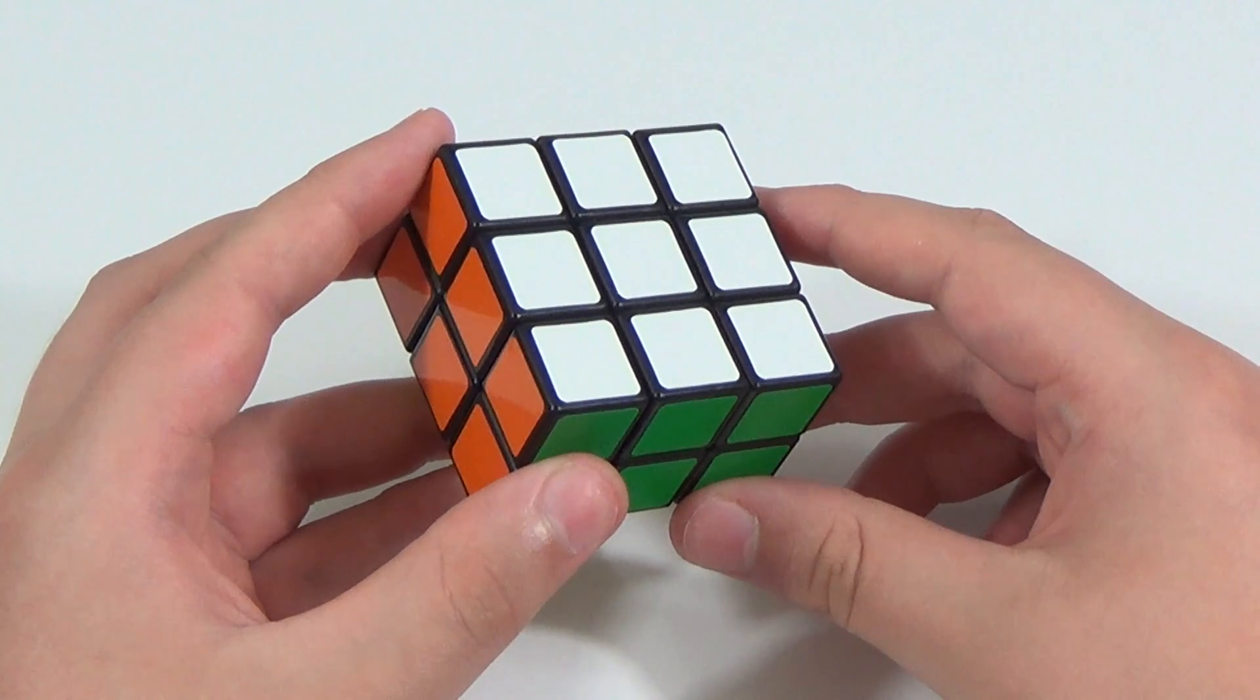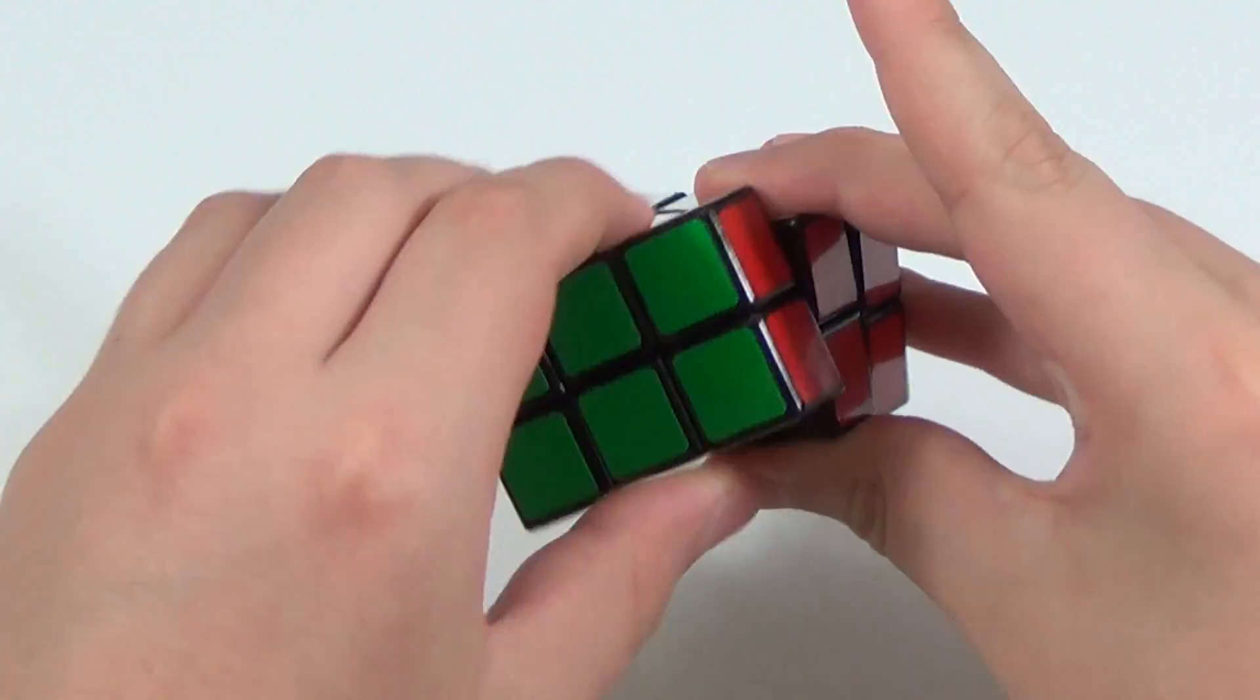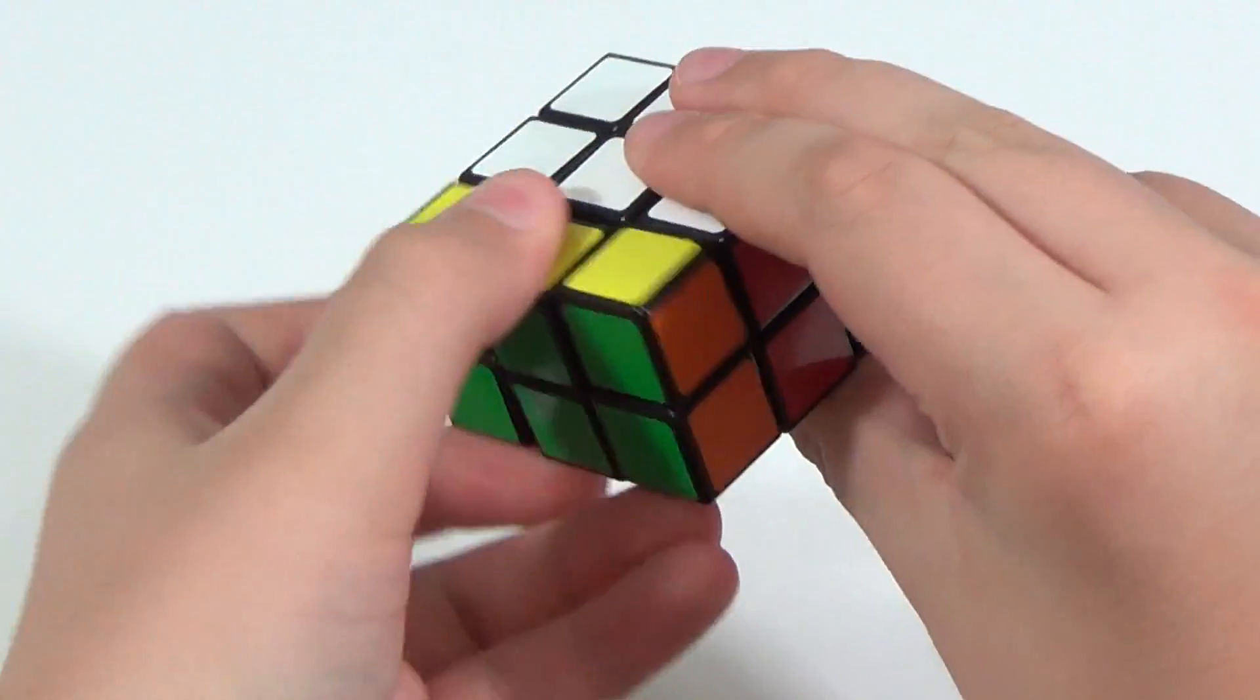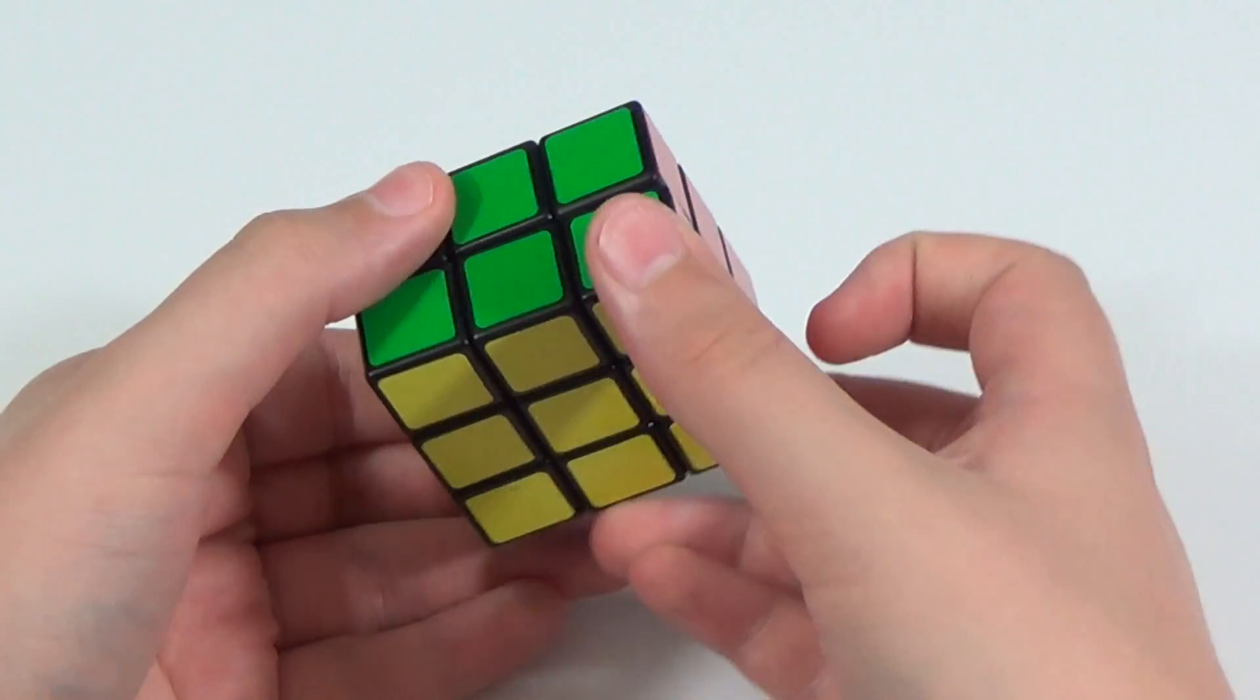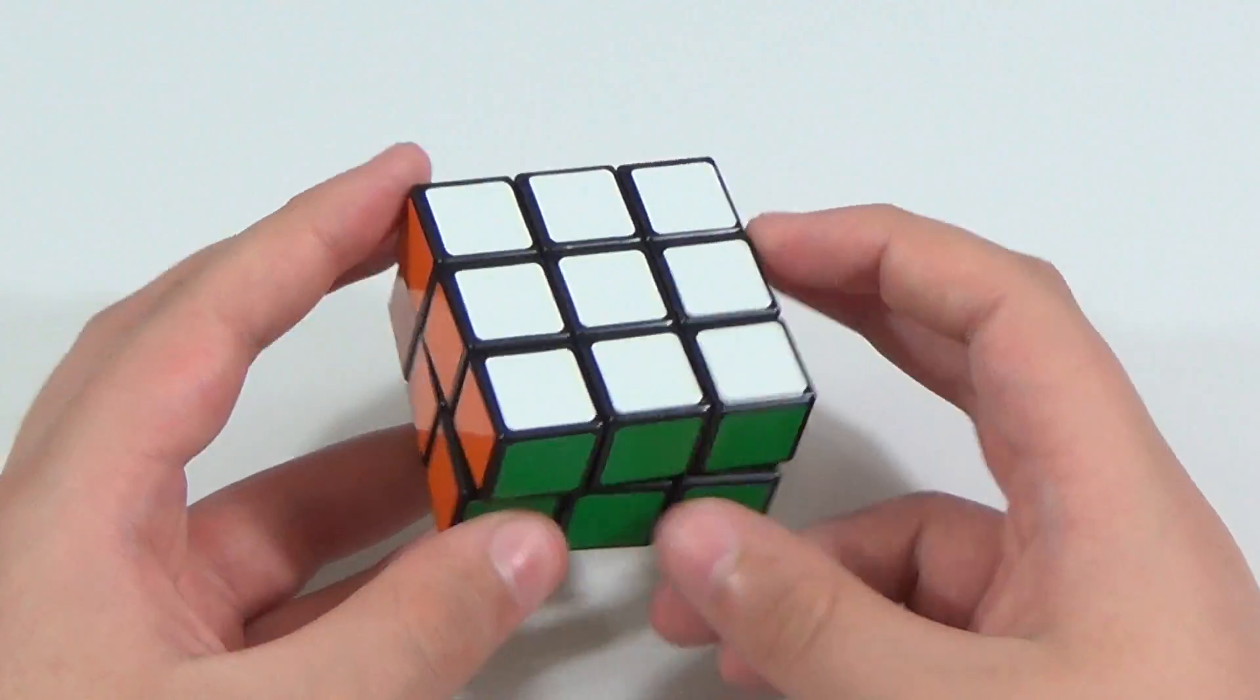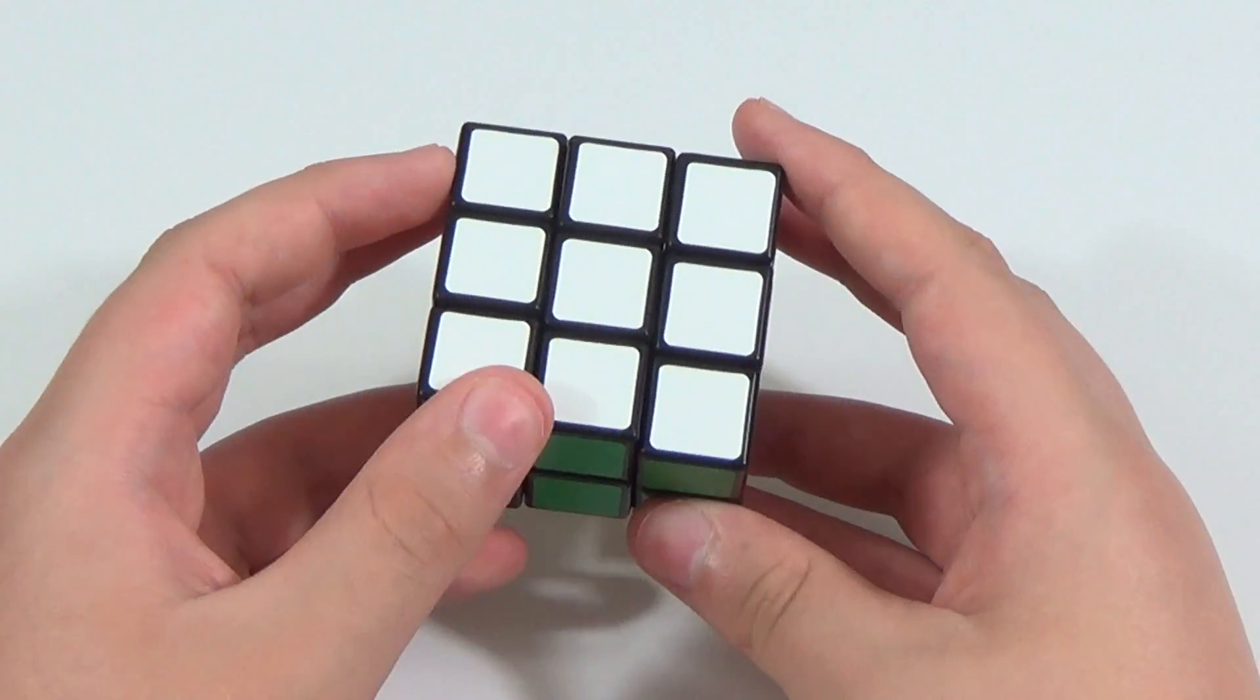So first things first, I just want to quickly go over notation. Since the 3x3x2 is not a shape-shifting cuboid, all R, L, F, and B moves are automatically R2, L2, F2, and B2 turns. And then of course the U along with the D moves stand for regular 90-degree clockwise rotations, and U' as well as D' are 90-degree counterclockwise rotations.